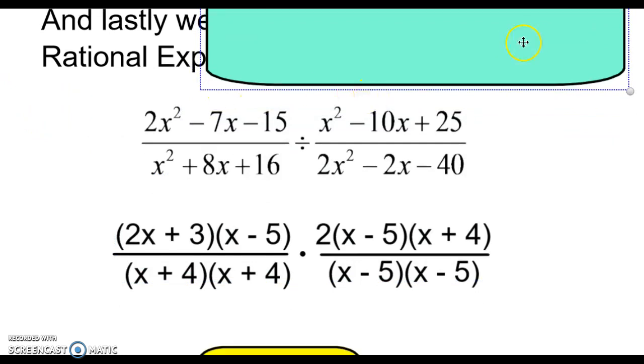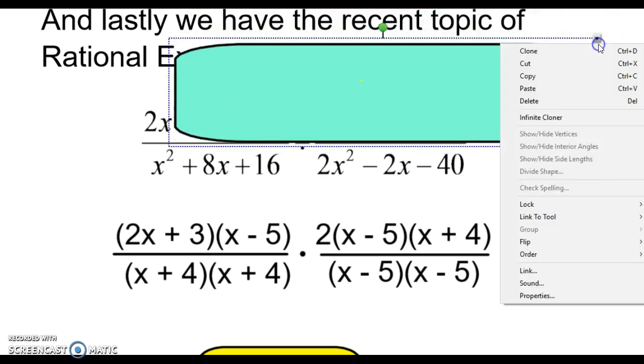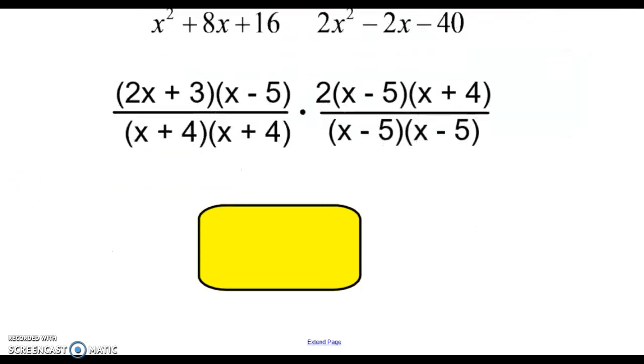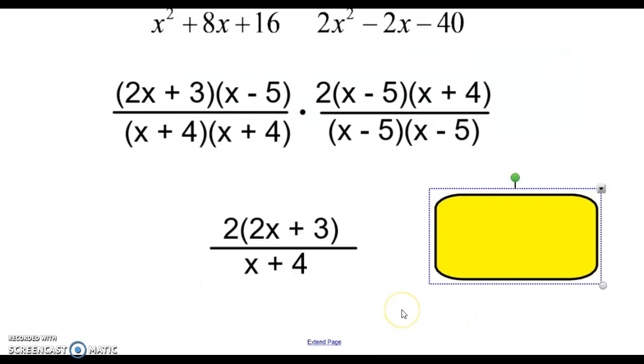Then after you factor it all, you cross off what matches on top and bottom. Crossed off everything. Leaves you with this for your final answer.